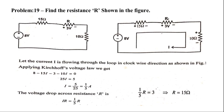Applying KVL: starting from the voltage rise, take it as positive and the rest negative. The equation is 8 − 15I − 3 − 10I = 0. Note: the 3 is a 3-volt voltage source, not a resistor, so it is written as 3, not 3I. Correction confirmed.